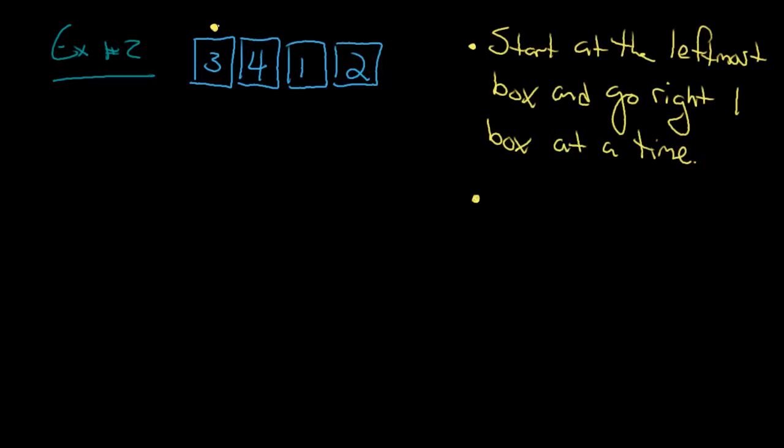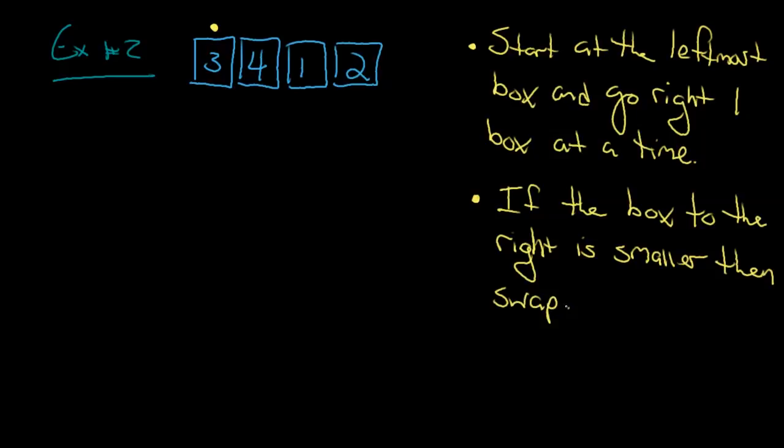So what would a computer do if it were to do this? In the first step, I might say the computer would start at the leftmost box and go right, one box at a time. So that's my first rule there, is I'm going to start here, and I'm going to go to the right one box at a time. But that doesn't really help me, I'll just go to the end and then I'm done. So I need another rule, and I need to give this some sort of ability to switch boxes, so that I can get the number one at the start. So let's just do this first, let's start at the leftmost box and go right one box at a time, and then we'll say, if the box to the right is smaller than the box, swap.